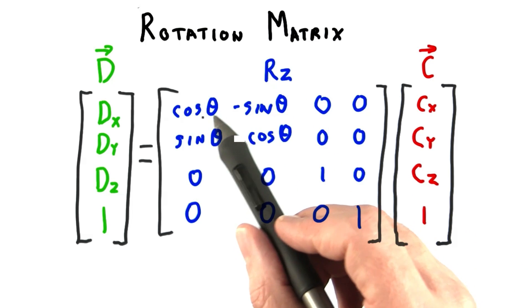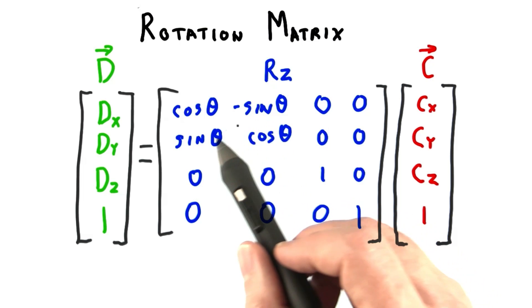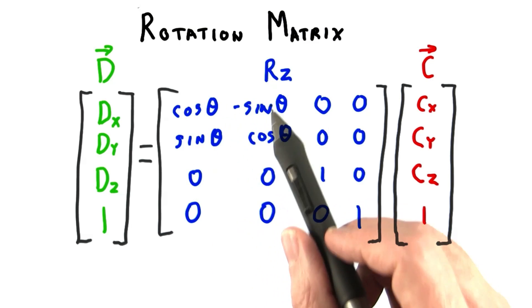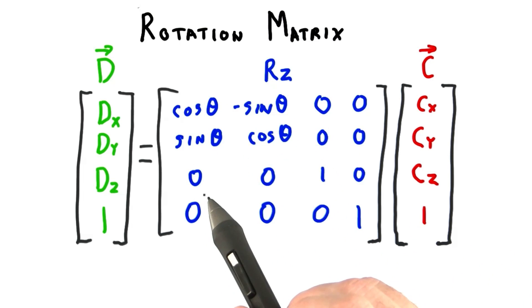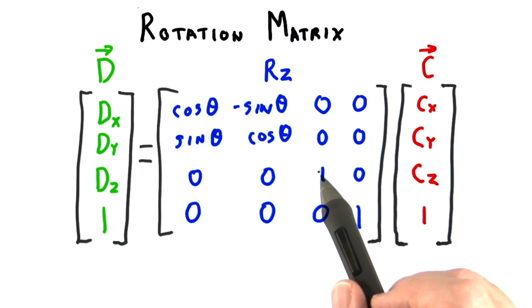The Greek letter theta is the angle of rotation. The cosine and sine of this angle are used to form a somewhat symmetric piece of the matrix here. The rest of the matrix is left alone. By leaving these values in the third row 0, and this value here being 1,